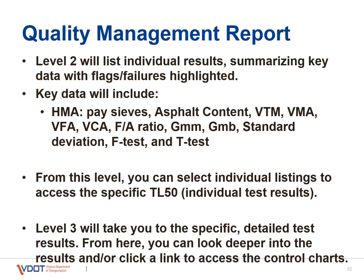You get to the QMR report by clicking on the HMA program. You can see filter boxes for date, district, year, and producer. When you enter the filter information, this will populate more information in the lots tab or samples tab that you can look into further, and you can also select individual listings to access a specific test result and look for more details. Level three can take you to a control chart.